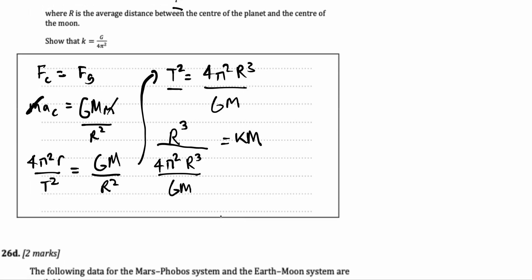r cubed over 4pi square r cubed over gm is equal to km. Now, let's solve this complex fraction. So we get r cubed multiplied times gm over 4pi square r cubed is equal to km. And if you don't see what I did, I just took the reciprocal as I'm doing division, cancel out the r cubed, I get that gm over 4pi square is equal to km.